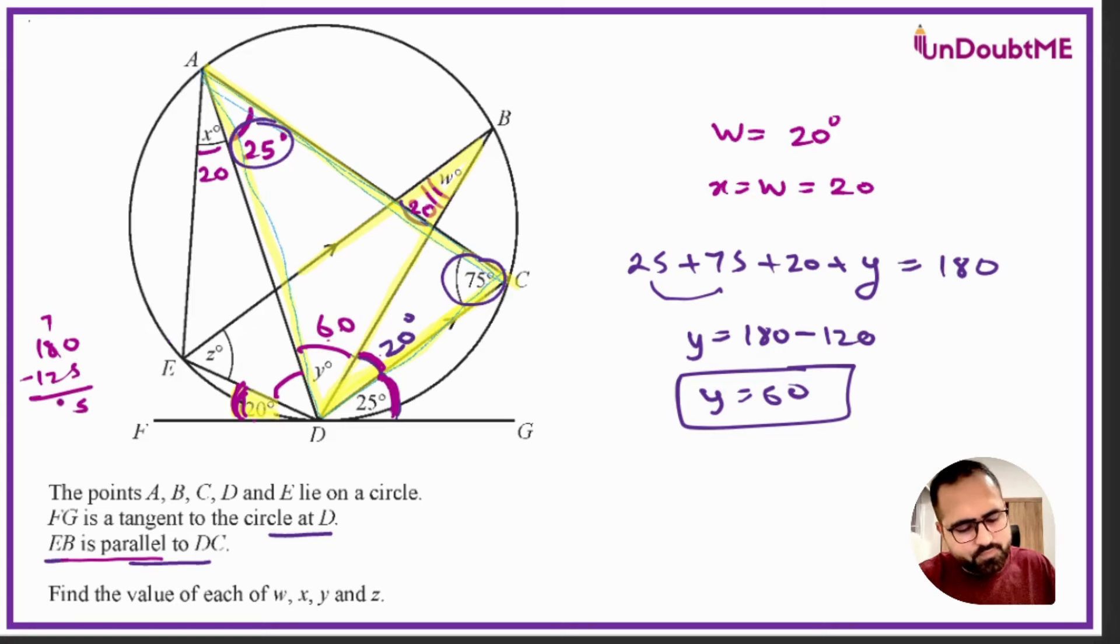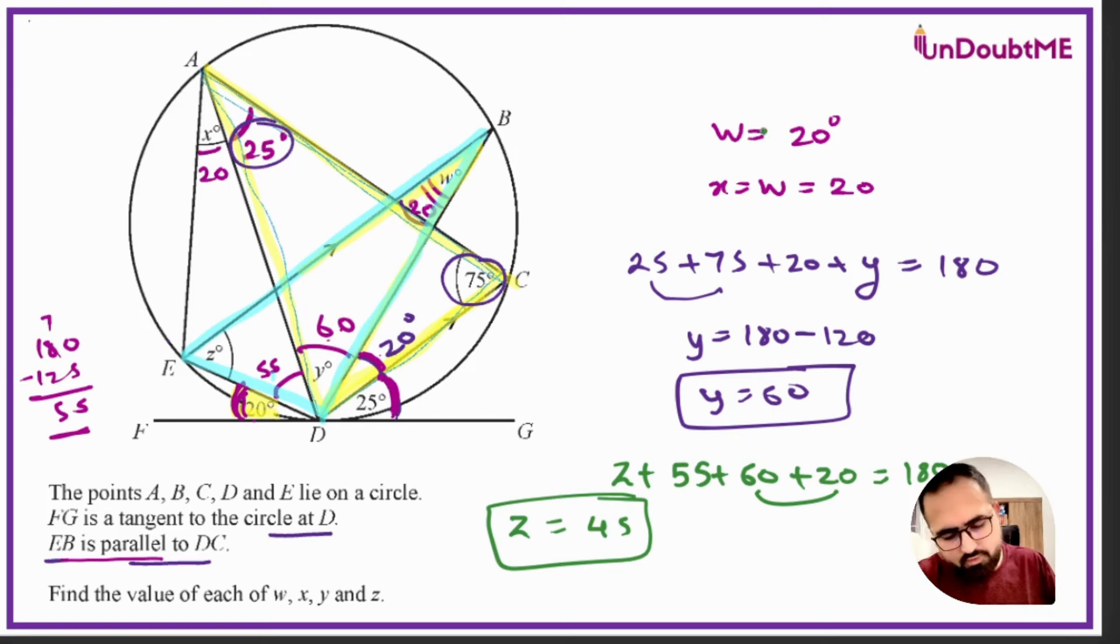Now we'll work in the triangle which I am highlighting with a different color. In this triangle, if you see, we have 55 plus 60 as one angle, another angle is 20, and the third angle is z that we can find. So z plus 55 plus 60 plus 20 is equal to 180. Z is equal to—80 goes on the other side, it will become 100. 100 minus 55 is 45. So the value of z is 45.